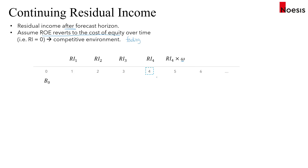We multiply omega by the residual income in year four, and for year six we multiply by the factor again, so we have RI4 multiplied by omega squared. Each year the residual income becomes smaller and smaller because omega is between zero and one inclusive.